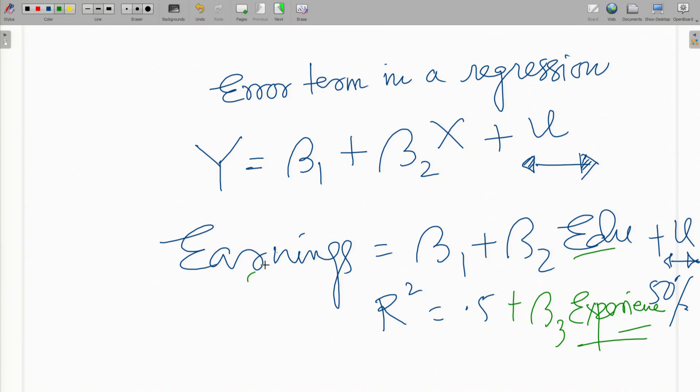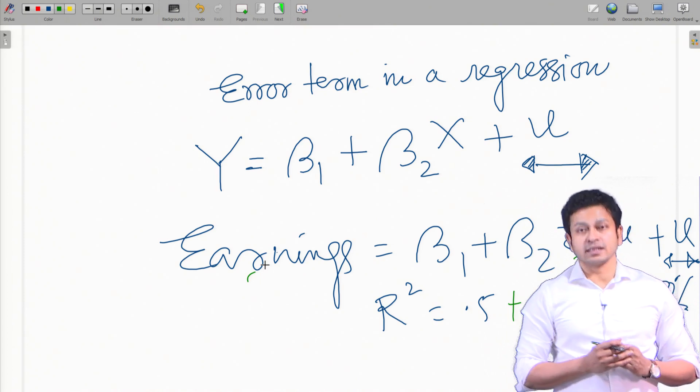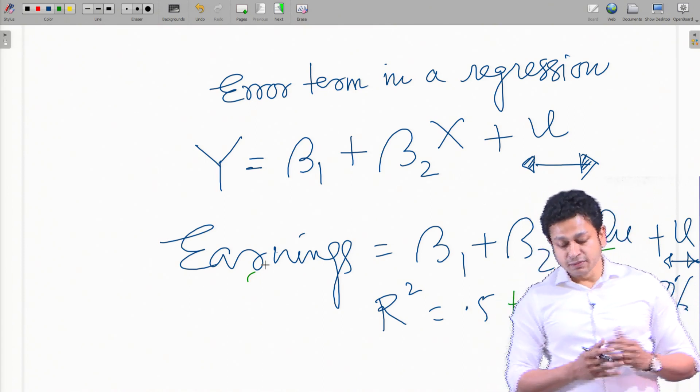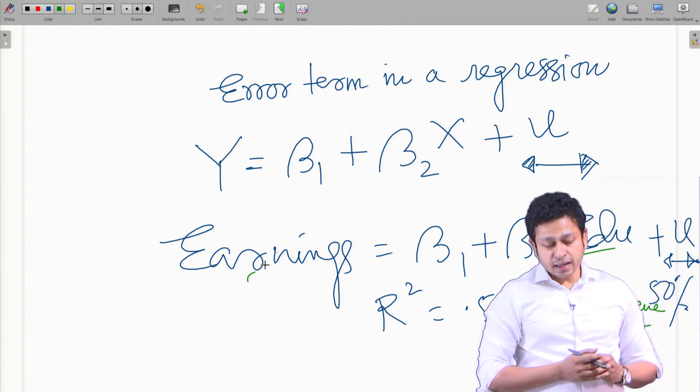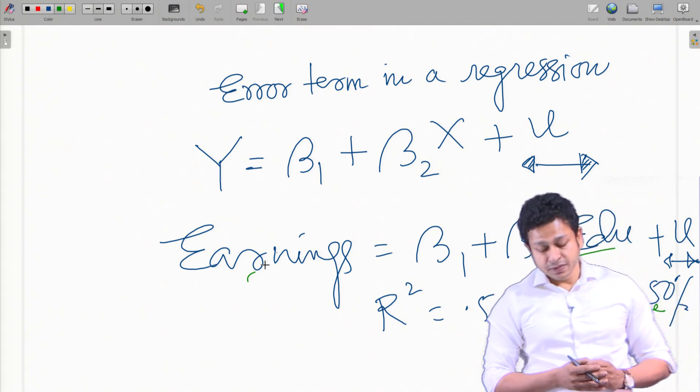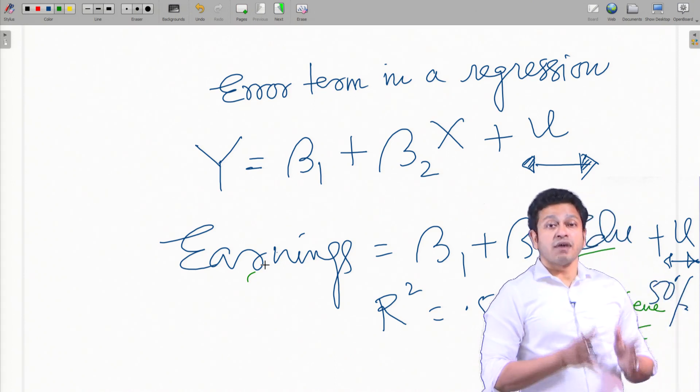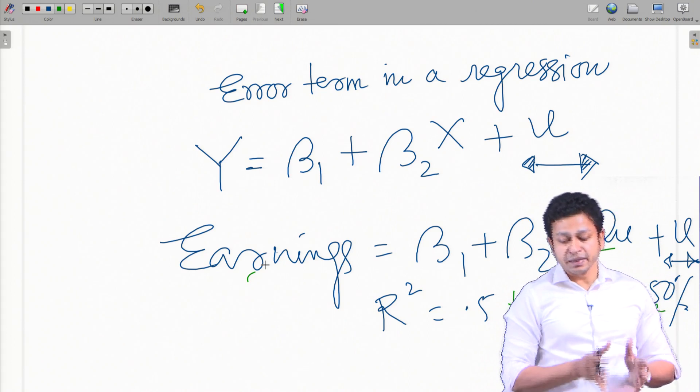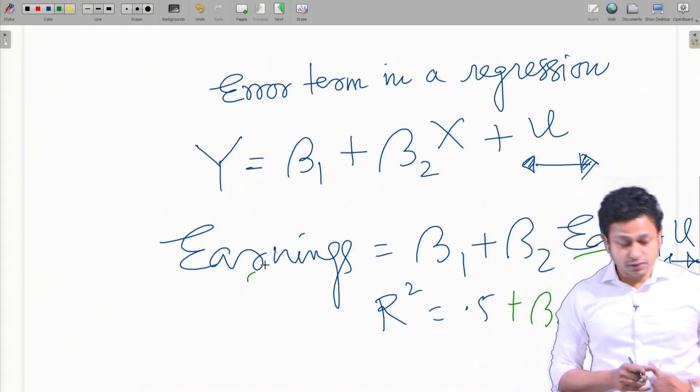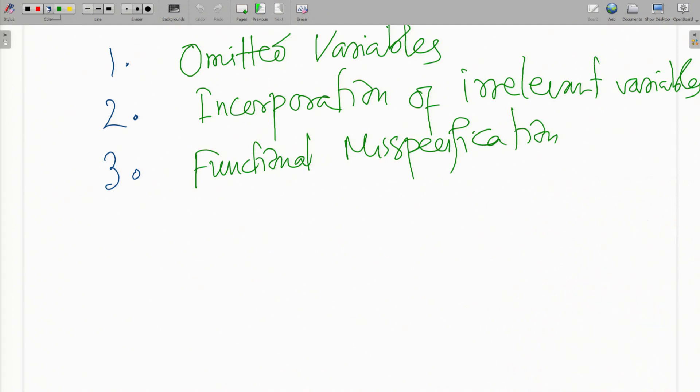For example, I might have a variable called experience square. I can actually take experience square and we will actually see that it is influencing earning even better. In economics, we often use a Cobb-Douglas production function. When we talk about model specification, we'll see how the functional specification is actually determining the robustness of the model. So that could be another source of error.